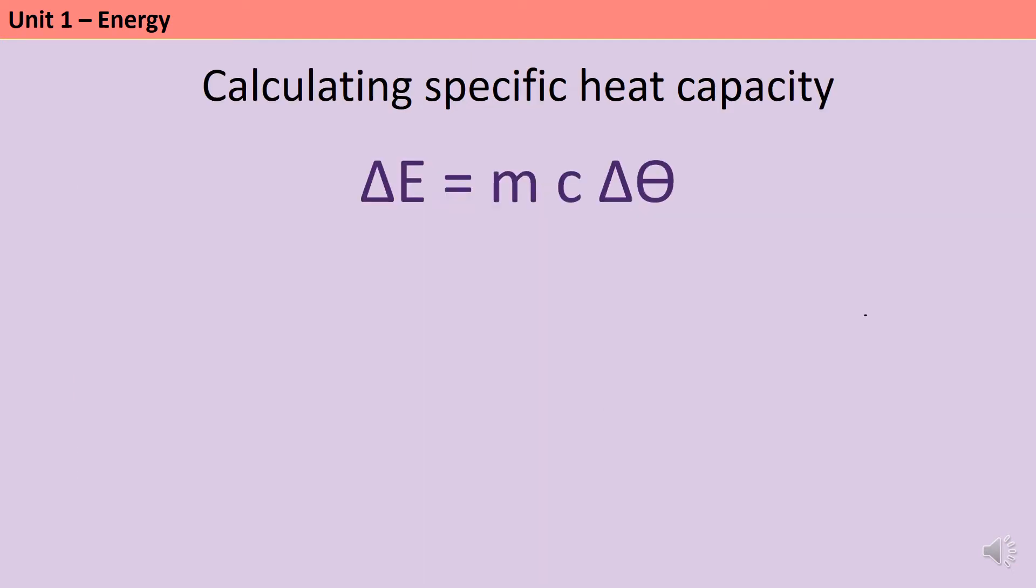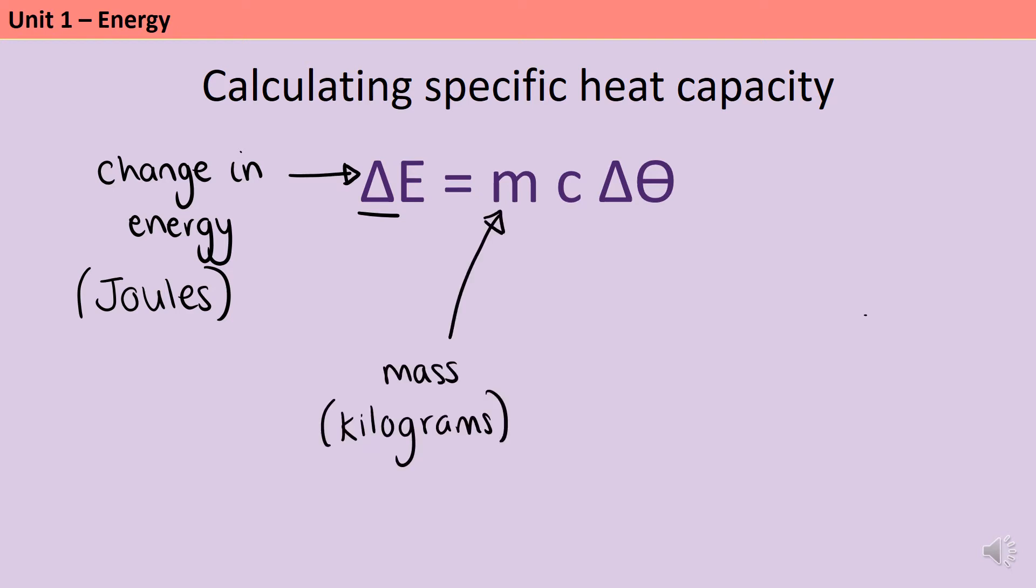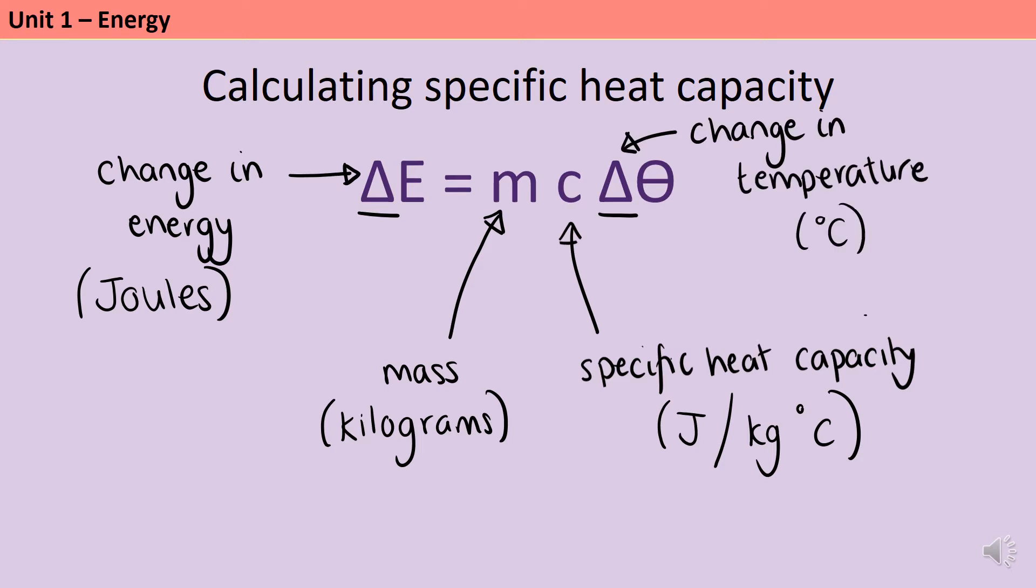The equation that links energy and specific heat capacity tells me that the change in energy, which is measured in joules, can be found by multiplying together the mass of that substance in kilograms, the specific heat capacity in joules per kilogram per degree C, and the temperature change in degrees C.